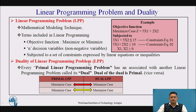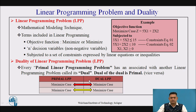The duality of a linear programming problem is such that every primal linear programming problem has an associated programming problem called the dual, and the dual of the dual is the primal. As shown in the table, if the primal problem is of maximized case, its dual will be of minimized case, and similarly if the primal is of minimized case, its dual is of maximized case.